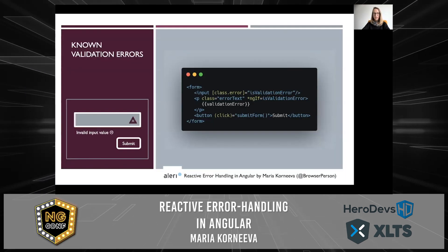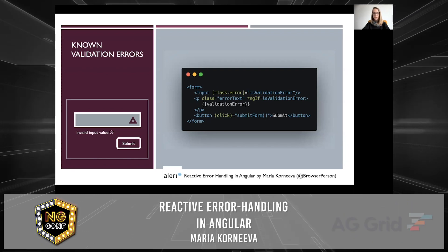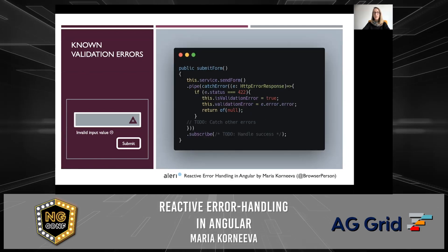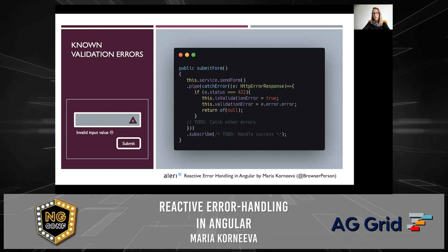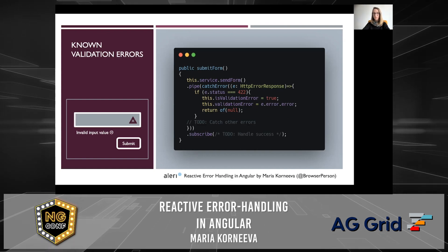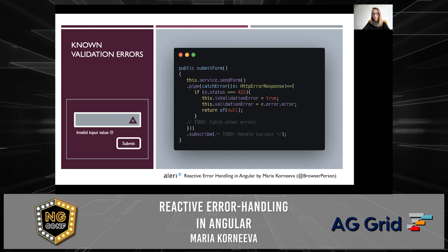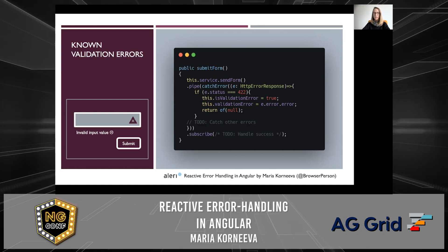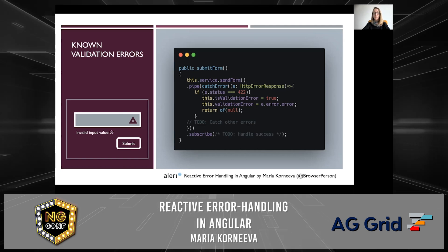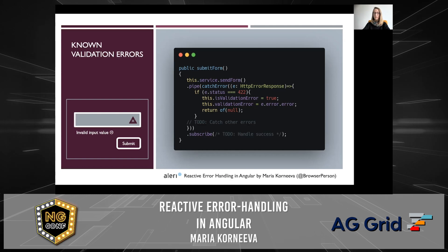Known validation errors. Let's say you have a basic form with one input field with some error message and a button. What you can do is use the catchError RxJS operator and check for the validation error status code — which in my case is 422 — and then just set this validation error to true and display your error message. You can handle other errors here too. But just imagine that you use this form multiple times across your application — then you have to duplicate or copy-paste your code, which is never a good idea.